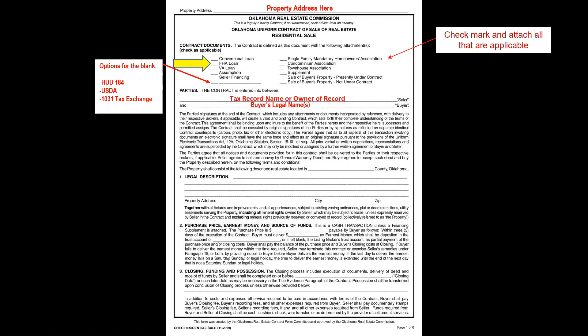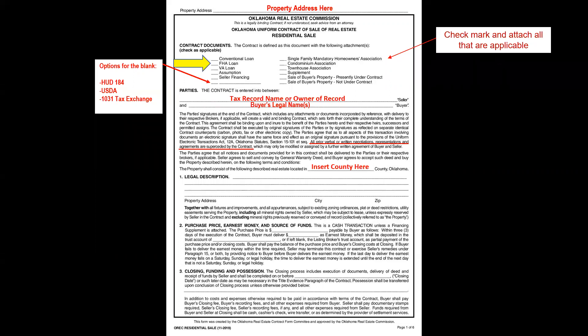In Oklahoma, electronic signing is allowed on contracts, and two identical counterparts can be combined to form one contract. The most important sentence in this section states: 'All prior verbal or written negotiations, representations, and agreements are superseded by this contract.' So if the MLS says the seller is leaving a washer, dryer, and refrigerator but it's not in this contract, the seller is not contractually obligated to include them — all information must be verified.